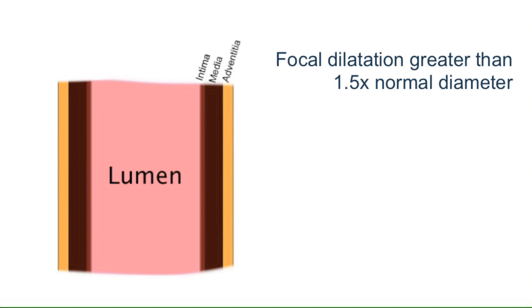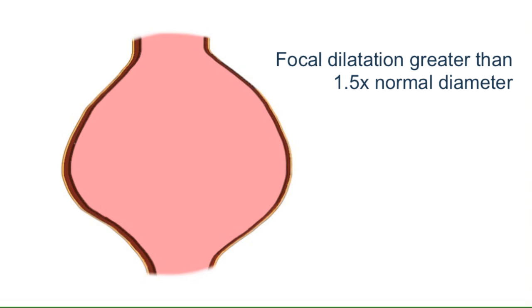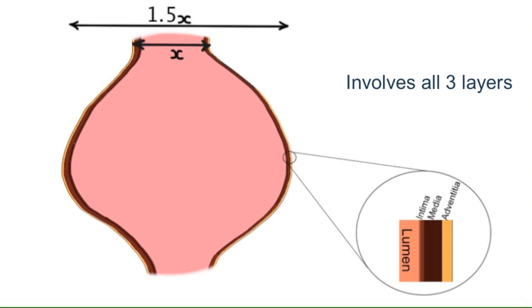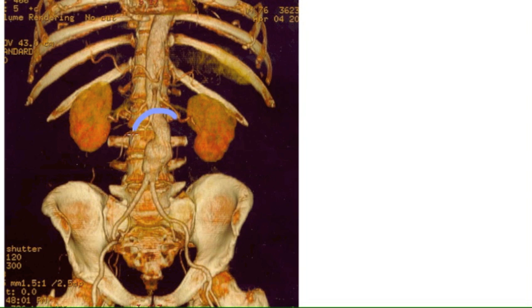An aneurysm is a focal dilatation of a blood vessel greater than one and a half times its normal diameter. To be a true aneurysm all three layers of the vessel wall must be involved. One of the most common places for an aneurysm to form is in the abdominal aorta below the renal arteries. This is known as an abdominal aortic aneurysm or AAA.